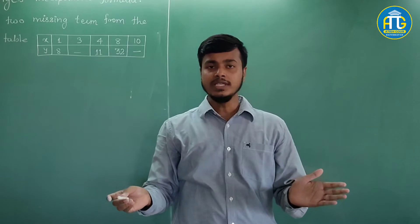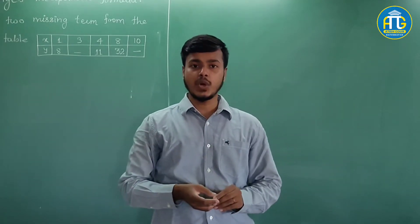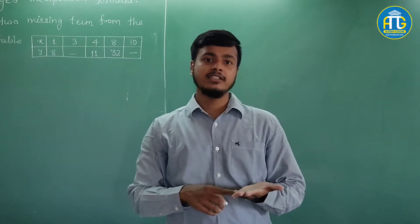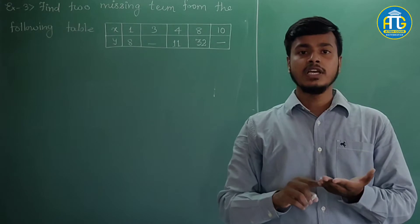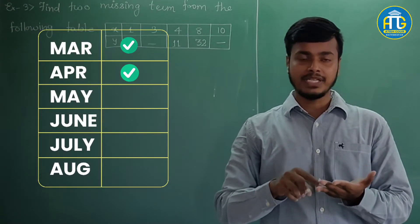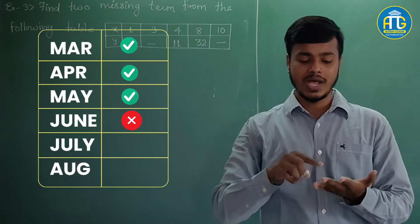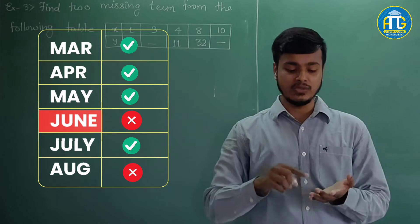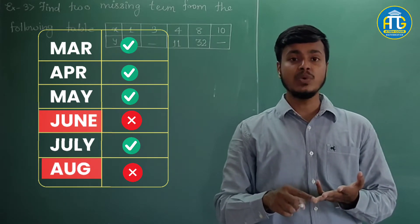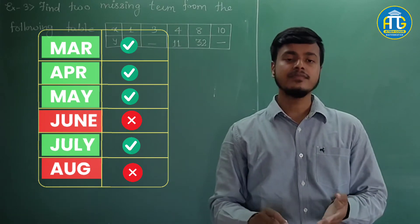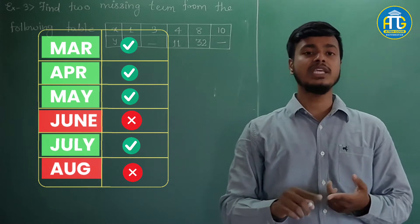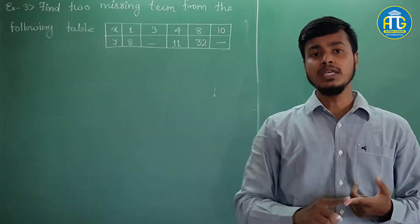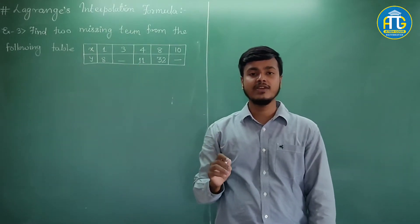Suppose you have data showing the number of COVID-infected persons from a particular city. You have data for March, April, May — but you don't have data for June. You have data for July, but you don't have data for August. You don't have data for June and August, but you have the data for the other months. With the help of the given data, you can easily find out the approximate number of infected persons in June as well as August. Lagrange's interpolation formula can help you find out such things.